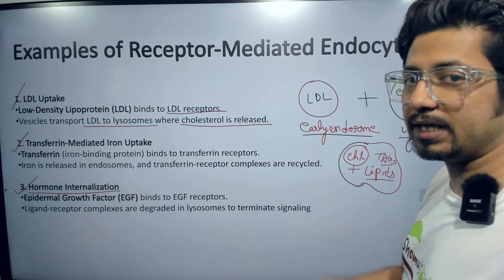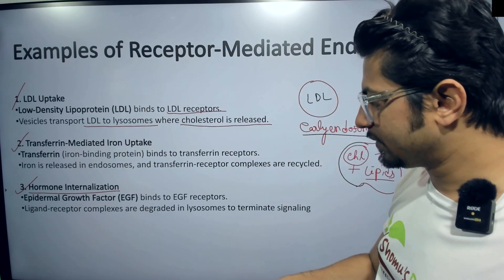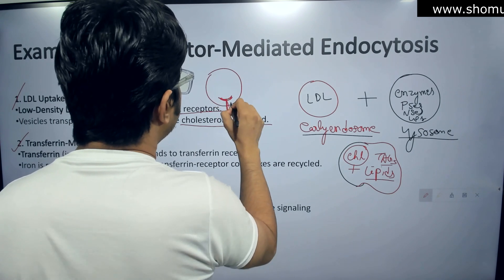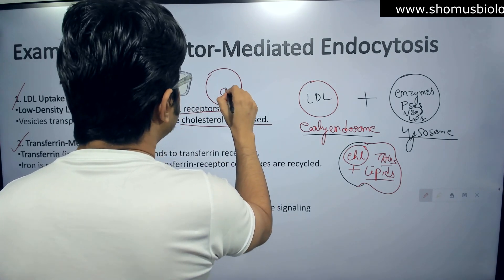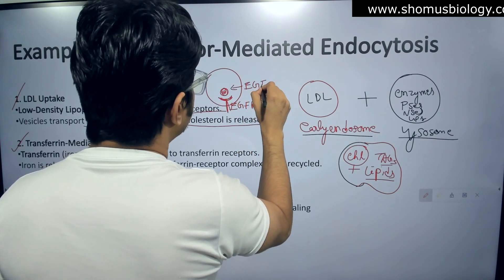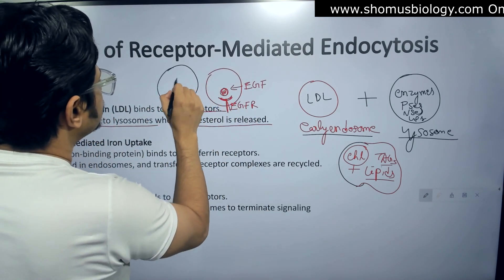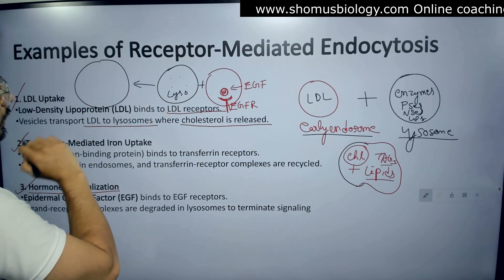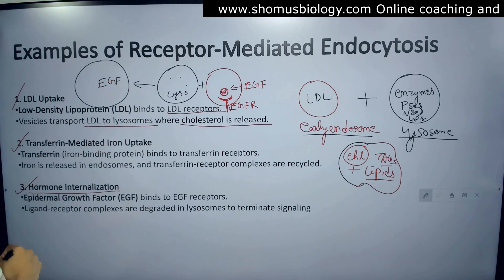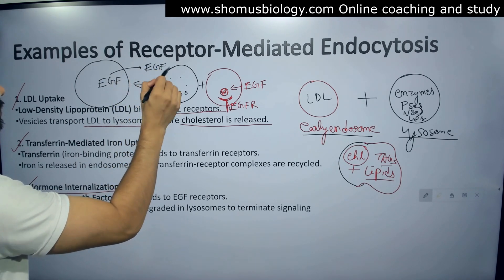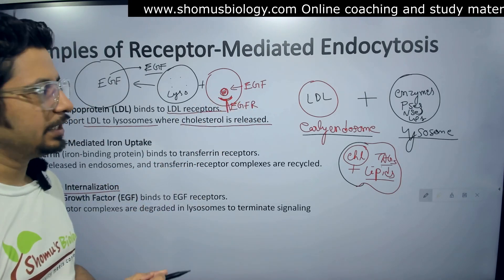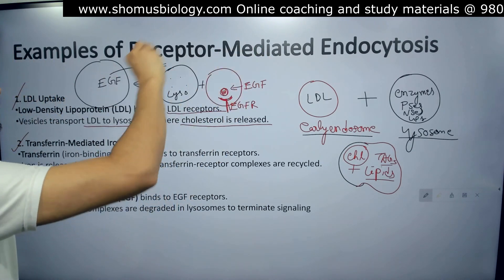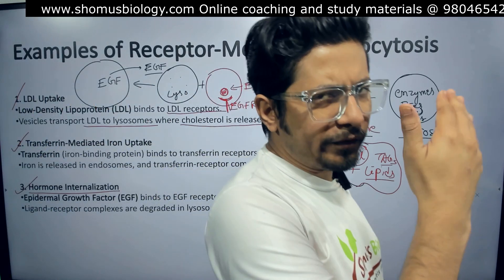Third example: hormone internalization — hormones like growth factors, specifically epidermal growth factor (EGF), bind to the EGF receptor. The ligand-receptor complex is internalized inside the cell, taken up into a vesicle containing the EGF receptor and EGF. Once this vesicle fuses with the lysosome, in the late endosome the EGF gets released into the cytosol of the cell. Similarly, if the receptor is the transferrin receptor, iron will be released in the cell after the vesicle fuses with the lysosome.